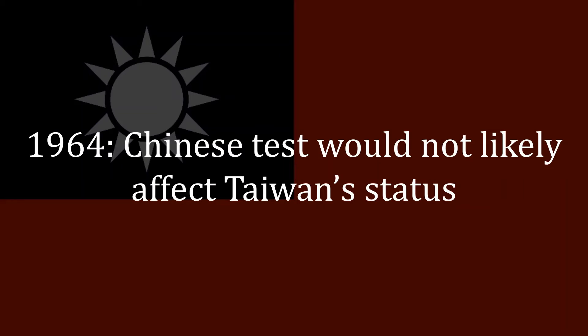Moving on, a 1964 report indicated that a Chinese nuclear test would not likely affect Taiwan's proliferation choices. We all know in retrospect that that was wrong.